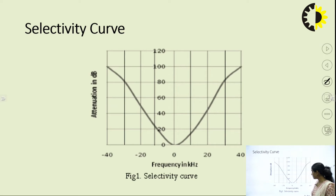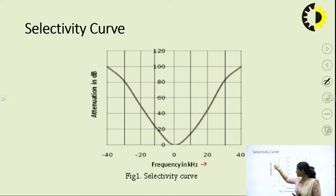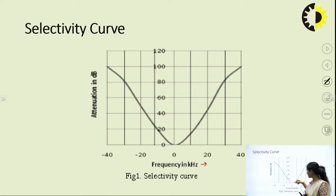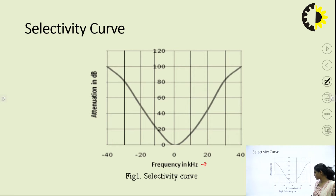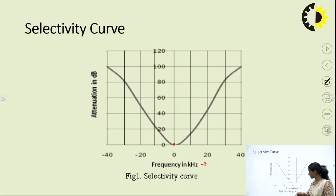Graphically, selectivity can be represented as a curve shown in the figure. Looking at the graph with frequency on the x-axis and attenuation on the y-axis, the selectivity graph shows that with increasing frequency, attenuation first decreases then increases. This forms the characteristic selectivity curve for both the negative and positive halves of the frequency spectrum.